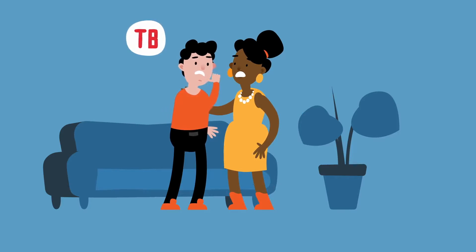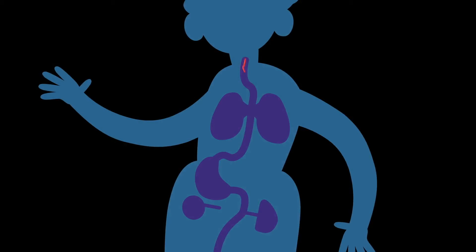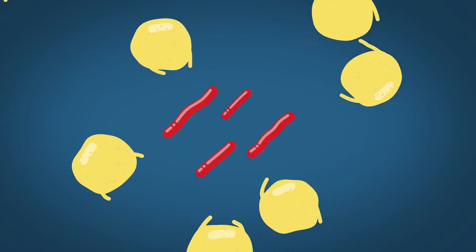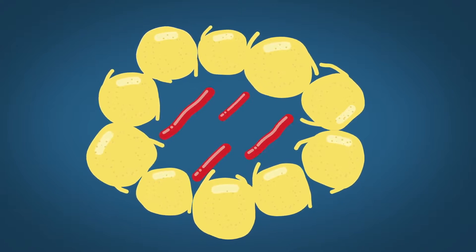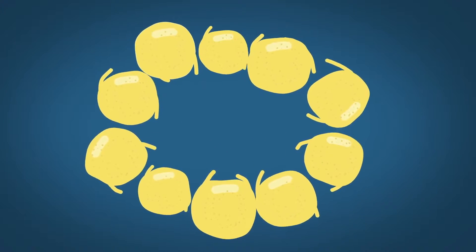If someone with infectious TB coughs, small droplets containing the bacteria can enter your lungs. In most cases, your body's defenses will kill the bacteria, so you won't fall ill or spread the disease. But the bacteria may also survive and become active later in your life.